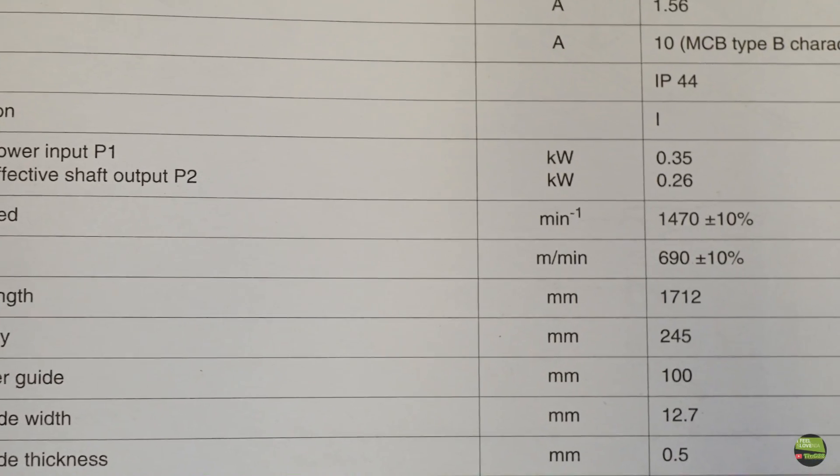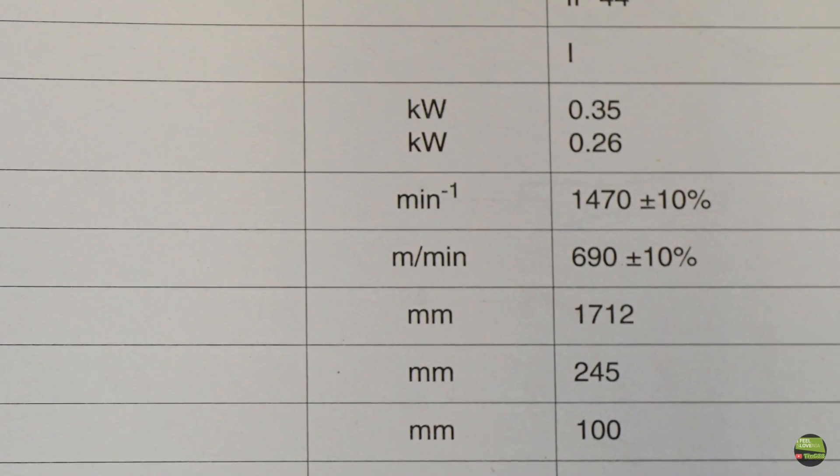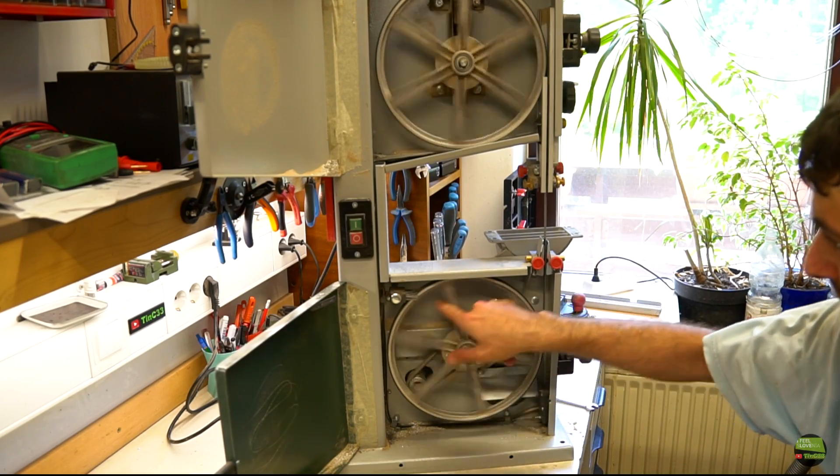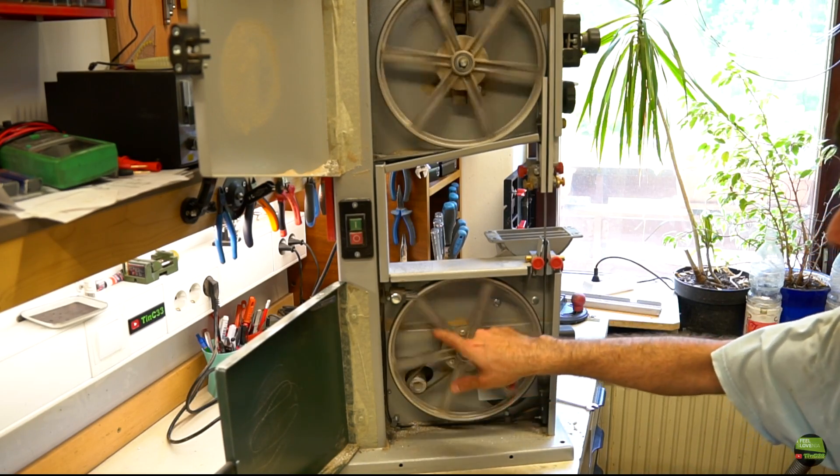The manual says that the saw runs at almost 700 meters per minute. The guy says that 300 meters per minute is maximum speed to cut non-ferrous material. So I decided to lower down the saw speed.